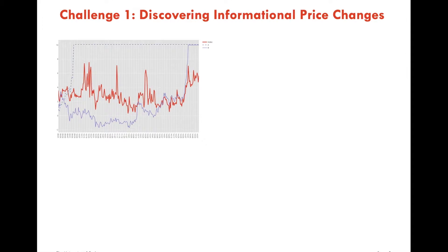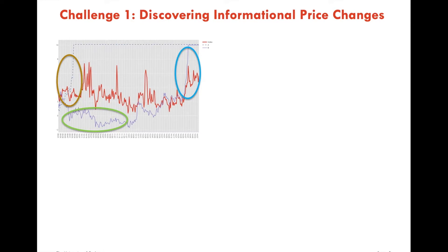So how do we achieve this? We mainly need to solve three challenges. First, discovering informational price changes. As an example, price changes of Stock B during this period are basically random volatility — they do not provide much information that Stock B will reach 10% at the end. On the contrary, the price of Stock A at the beginning already has a pretty obvious trend. We want our model to be able to capture such price changes.